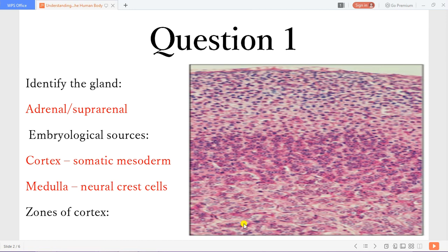So the embryological sources, the cortex comes from the somatic mesoderm, while the medulla comes from neural crest cells.